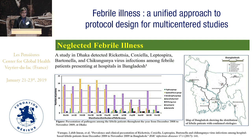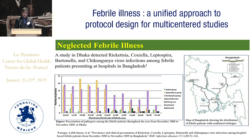Neglected febrile illnesses: looking at the bottom figure, the study detected different neglected febrile illnesses. Among them are rickettsia, coxiella, leptospira, bartonella, and chikungunya virus among febrile patients presenting at different hospitals in Bangladesh. The right-hand map shows the distribution of febrile patients with confirmed etiologies.